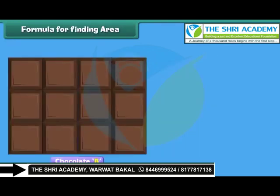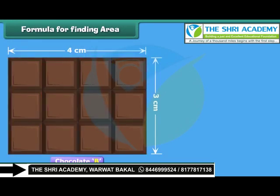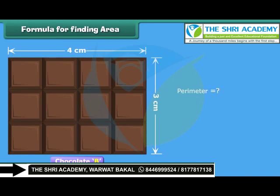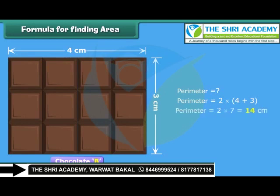We found the area of chocolate B by counting the total number of squares on it. Alternatively, we can calculate the area by multiplying the number of squares along the length with the number of squares along its width. Thus, area is equal to length multiplied by width. The perimeter will be equal to twice the sum of the squares along its length and width. Thus, the perimeter of chocolate B is equal to 14 centimeters.